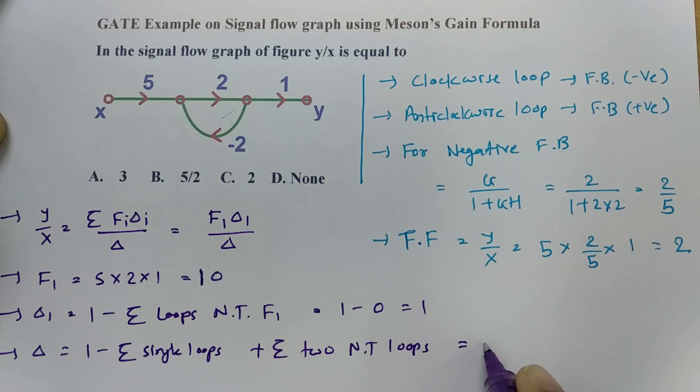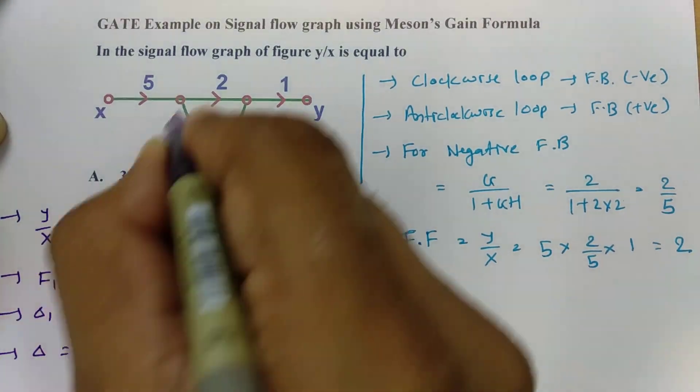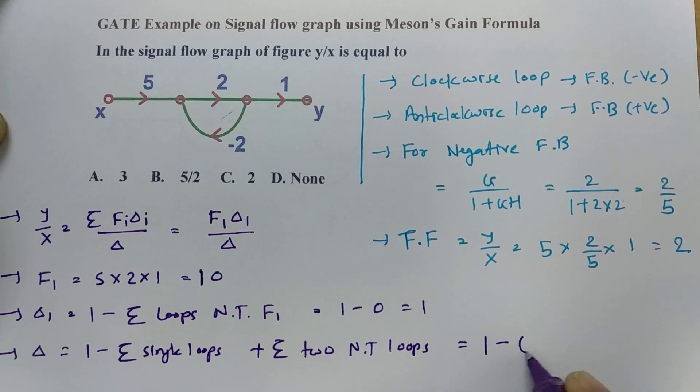So we can say 1 minus this loop is minus 4. So this is 1 plus 4, so that is 5.